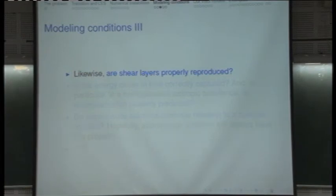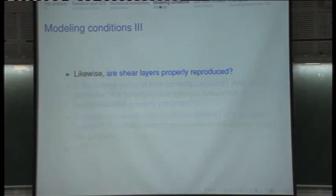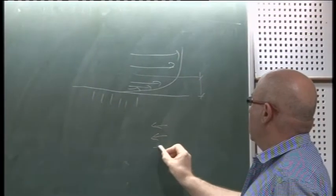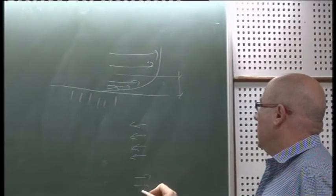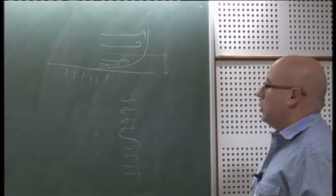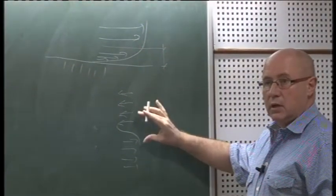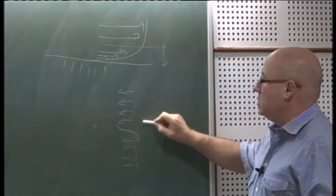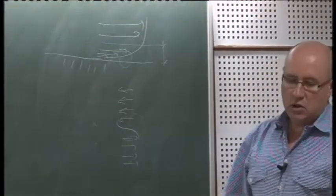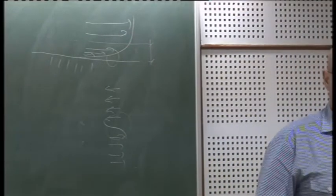Are shear layers properly reproduced? A shear layer is a region where the velocity has a strong variation, but not near the boundary — in the mean flow. Imagine streamlines going in one direction, then streamlines going in the other direction. There will be a region where there is a change in the sign of the velocity. That region is very thin if the viscosity is small, and thicker if the viscosity is high. Those are called shear layers, and you only need an important gradient in the velocity.